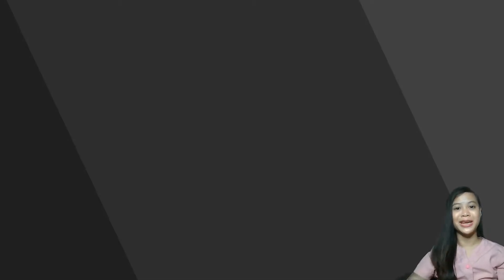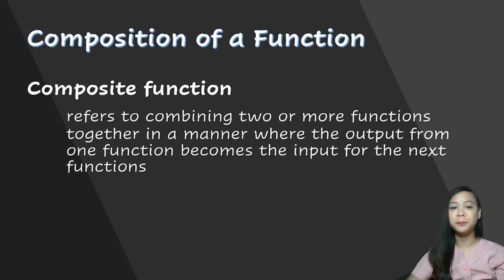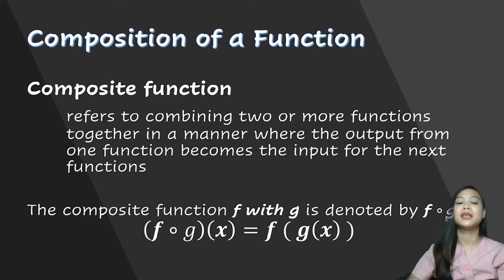As part of lesson three, we have composition of a function. What is a composite function? It refers to combining two or more functions together in a manner where the output from one function becomes the input for the next functions. This composite function f with g is denoted by f dot g.